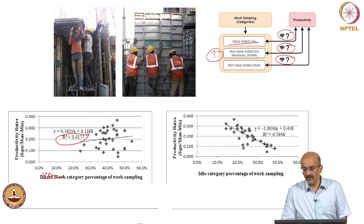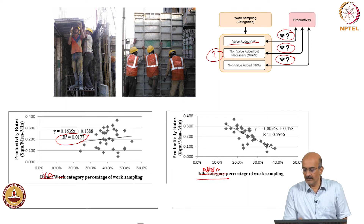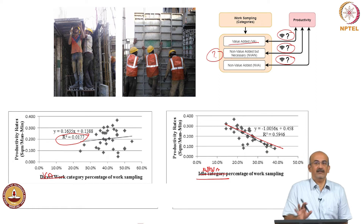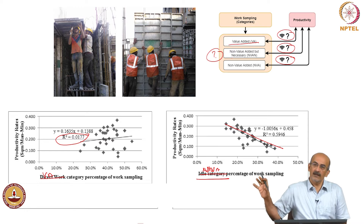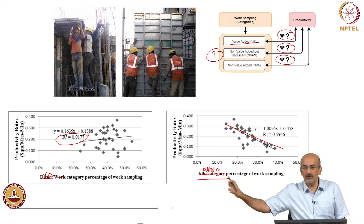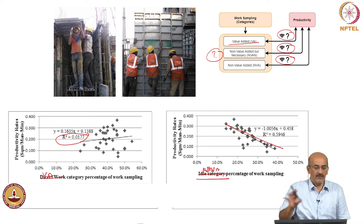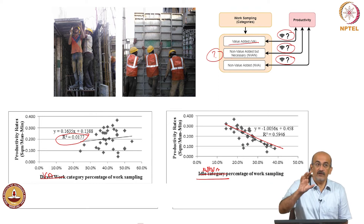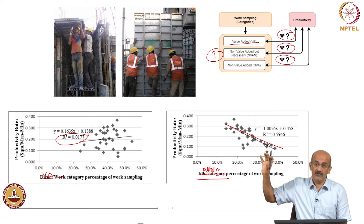But on the other side, when we took idle or non-value added and productivity, we found that the more the idle time, the productivity decreased. So one thing is clear: if I go to a site and find a lot of non-value added activity, then my productivity measurement system is going to show a lower productivity.